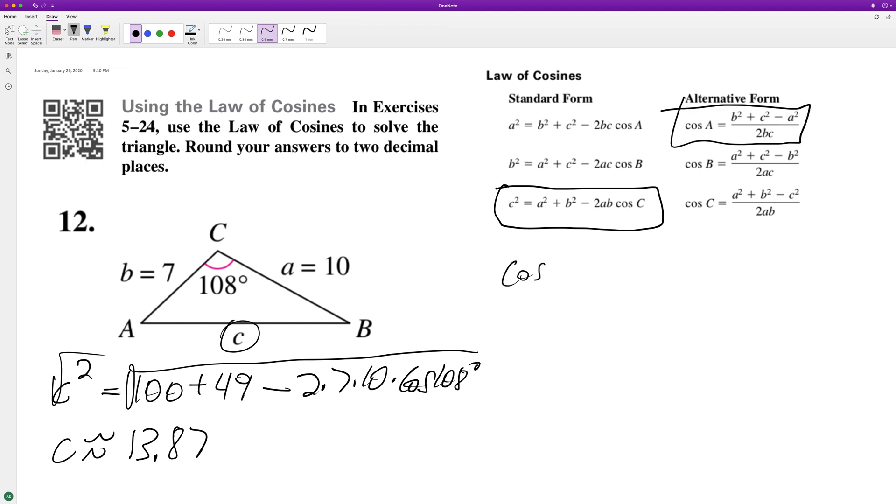Cosine of A equals B squared, so 49, plus C squared minus 100, over 2 times B times C. And if we take the inverse cosine of this whole thing, we get A equals approximately 43.31 degrees.